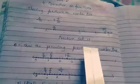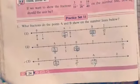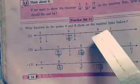Now practice it — exercise 11, question number 1: What fractions do points A and B show on the number lines below? Three number lines are given.